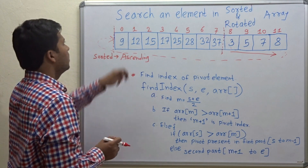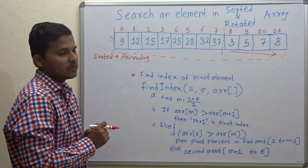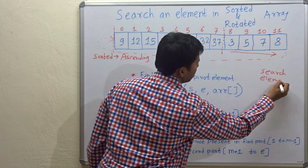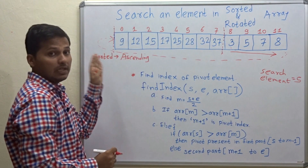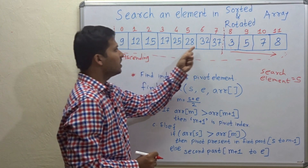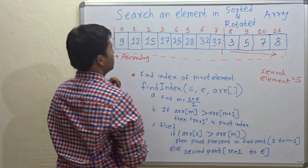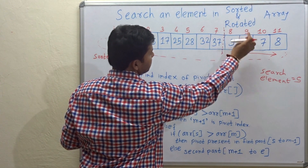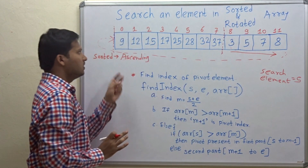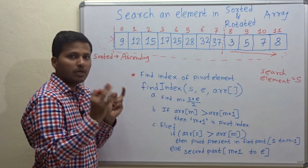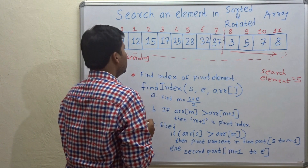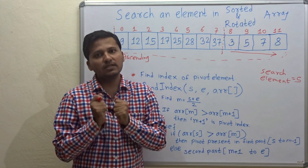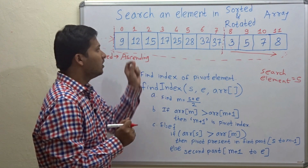Now let's look at how to search an element in this array. Suppose you want to search for 5. With linear search you will search every memory location of the array. In a for loop you access every memory location, and when you reach the ninth memory location you will get 5. So from index 0 to 9, you access a total of 10 memory locations.